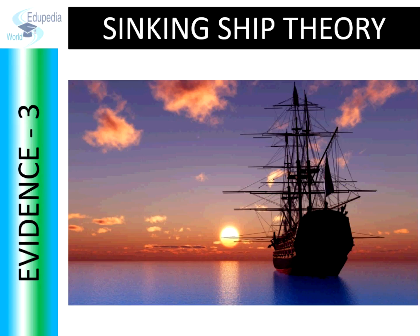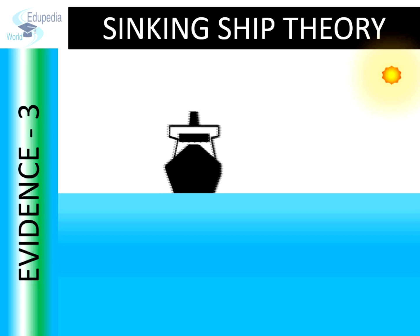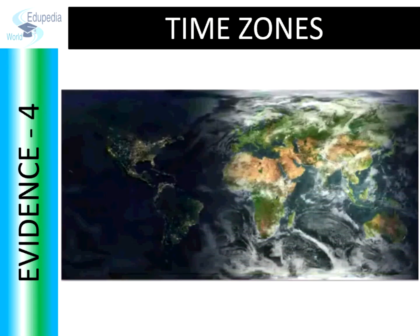Third, another evidence is the sinking ship theory. If we watch a ship departing from the land, we will observe that the lower part of the ship will start disappearing first, then the middle part, and eventually the entire ship disappears. If the Earth was flat, then we would have been able to see the whole ship at a time.